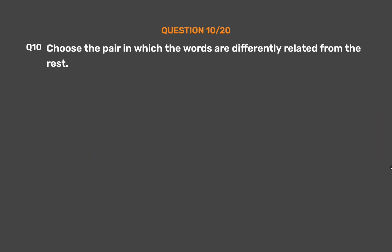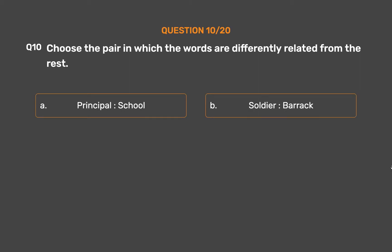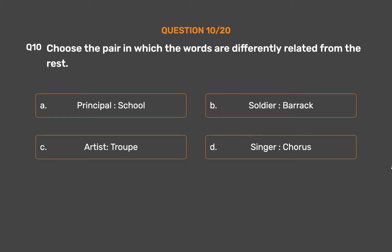Question number 10. Choose the pair in which the words are differently related from the rest. Option A: Principal, School. Option B: Soldier, Barrack. Option C: Artist, Troop. Option D: Singer, Chorus.